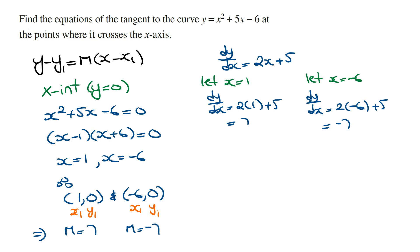And so the equation of the tangent line at the point (1, 0) is going to be y minus 0 equals 7 times x minus 1. Solving for y, y equals 7x minus 7.